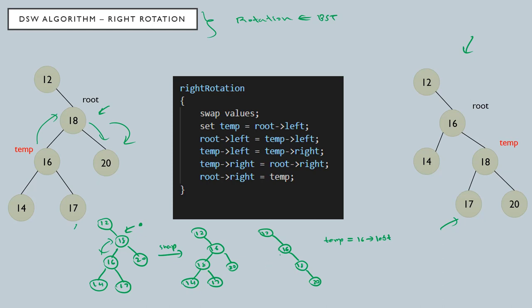We attach 17 to this side. That is how the pointers work. I just followed this algorithm — nothing new. First I swap the values, then I store the left side. Let me change the color. First I stored the newly constructed left side in the temporary variable, then I pointed root left to temp. This is the root left and this is the temp.